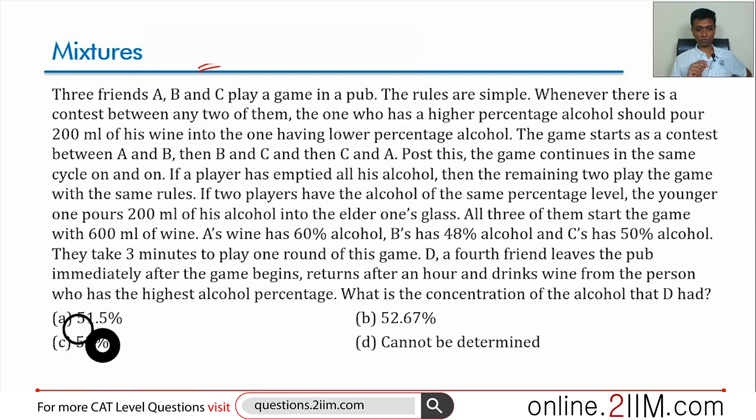wine. A's wine has 60% alcohol, B's is 48% alcohol, and C's is 50% alcohol. They take three minutes to play one round of this game. D, a fourth friend, leaves the pub immediately after the game begins, returns after an hour and drinks wine from the person who has the highest alcohol percentage.